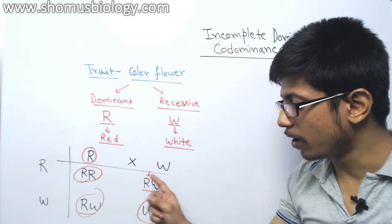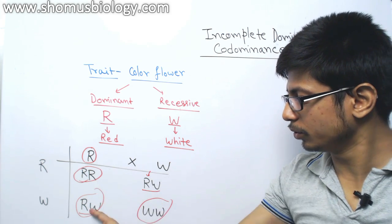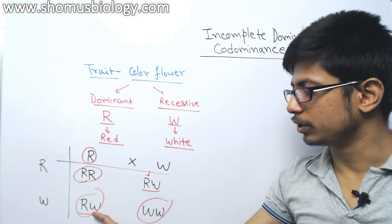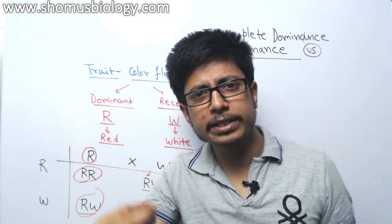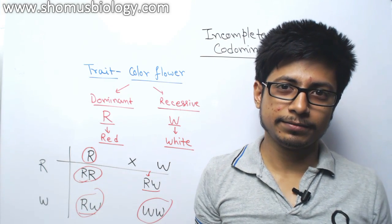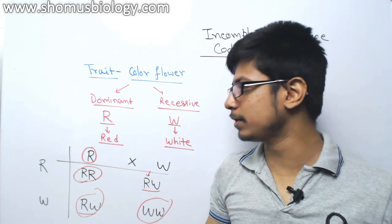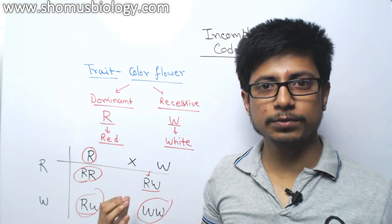So the ratio of the phenotype in the F1 generation is one is to two is to one of red flower, one is to two pink flower is to one. So here you see a complete new variety of phenotype is originated. The third new phenotype pink, which you haven't seen in the parental generations is now originated. This is one event.